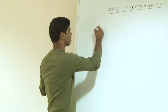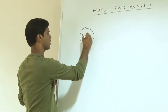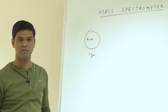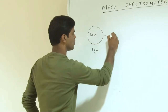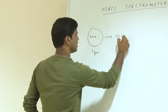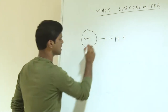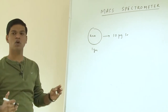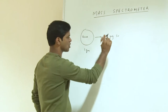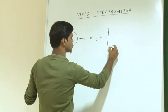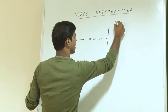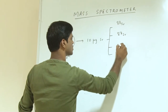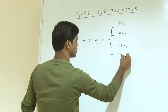To give you an example, let us say you have a rock and you took around 1 gram of the rock and you are interested in a particular element - let us say it is strontium. If you measure the strontium, let us say you find that there is 10 microgram of strontium in this particular rock.